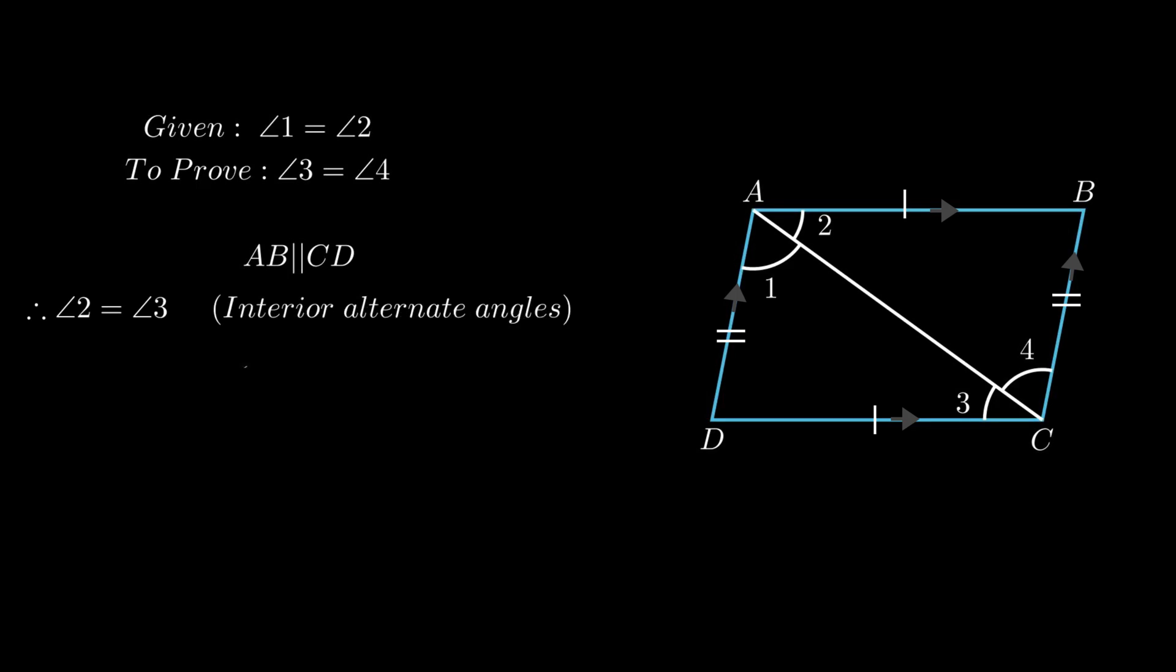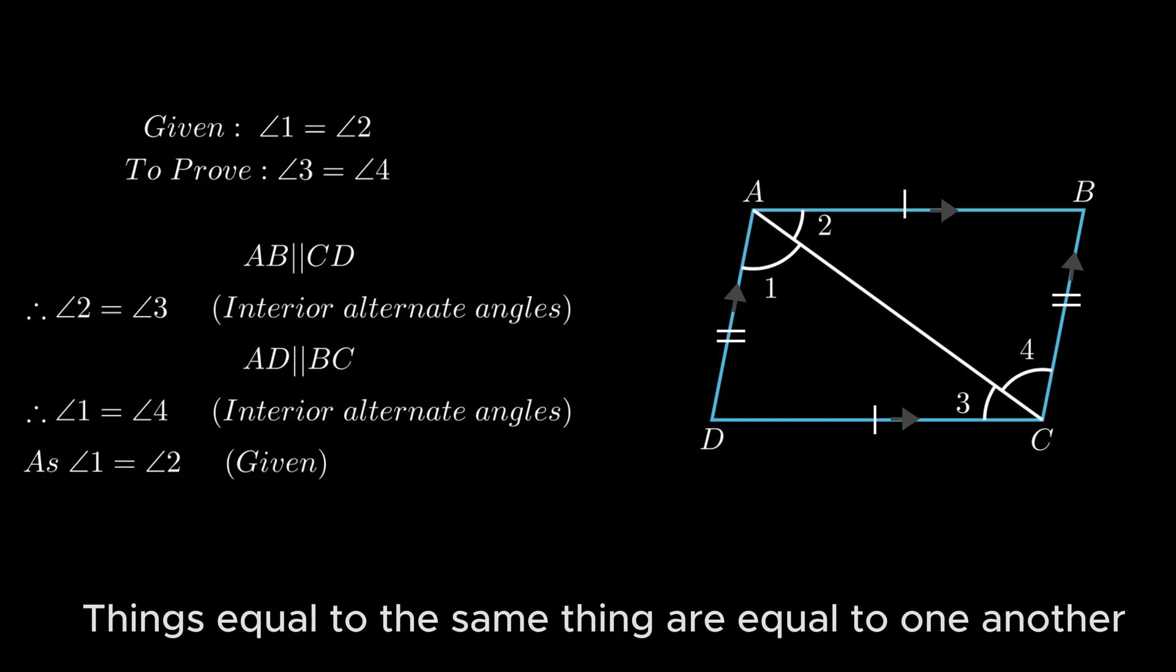Also side AD is parallel to side BC, therefore angle 1 equals angle 4 as interior alternate angles are equal. As angle 1 equals angle 2, therefore by using the axiom that things equal to the same thing are equal to one another.